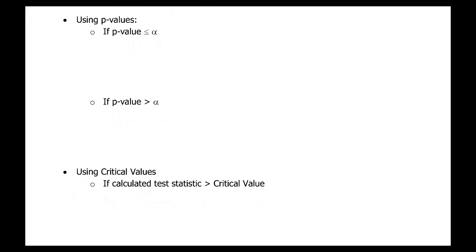The first method we're going to look at for drawing conclusions is comparing a p-value to alpha. The p-value is the probability of seeing a certain result, and alpha is the predetermined cutoff value for a probability that we decide on before a problem.